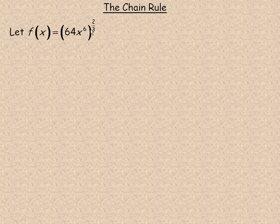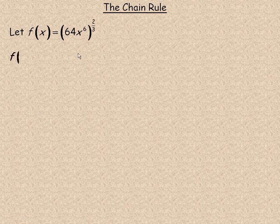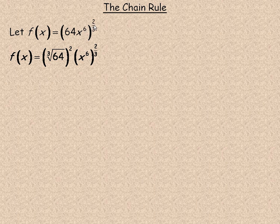It's like we have x to the power of 2/3, and then in place of x, we have 64x to the 6th. I'm going to show how to differentiate this without using the chain rule, just to verify that the chain rule does work. But most of the time, you won't be able to avoid using the chain rule when you have a function of a function — in this case, you can.